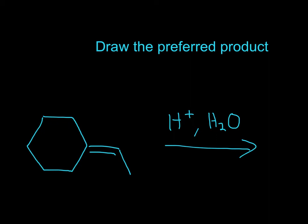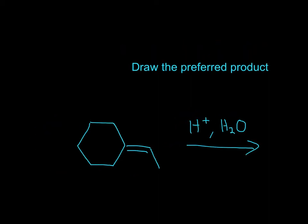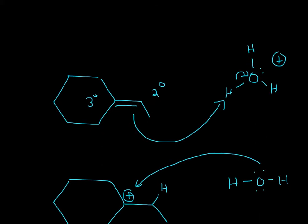Try this problem first and then I'll explain it. Let's label what the different carbons are on the alkene. This carbon is secondary, there's two carbons, and this carbon is tertiary, there's three carbons.